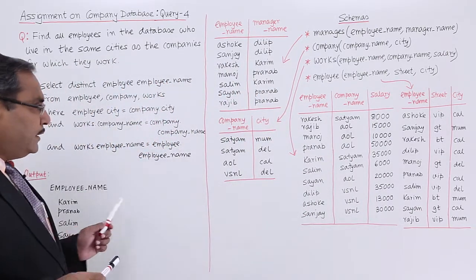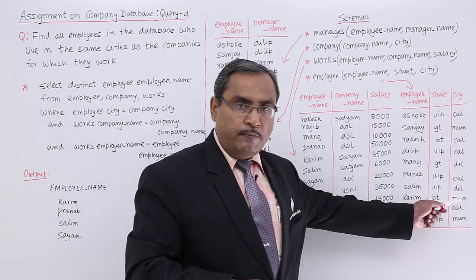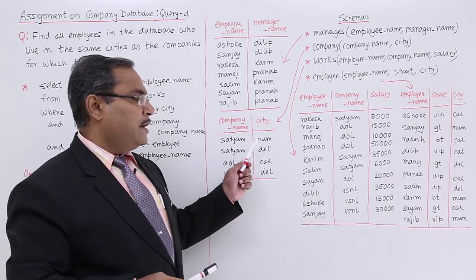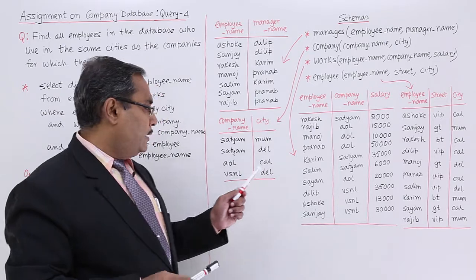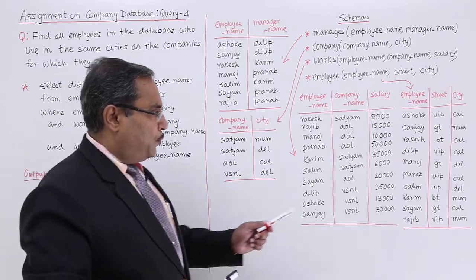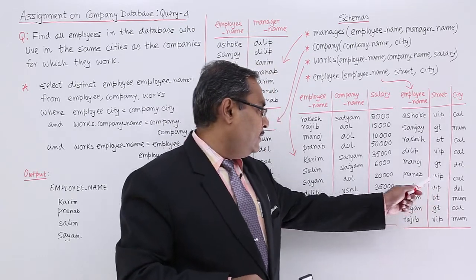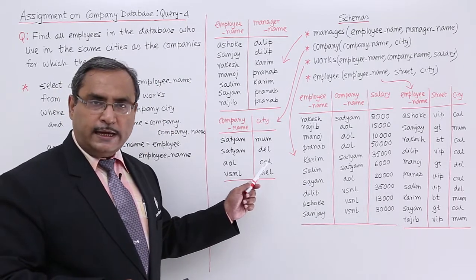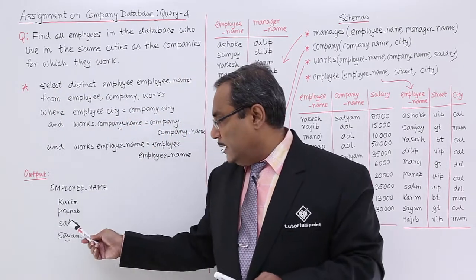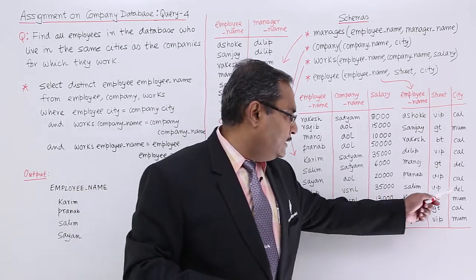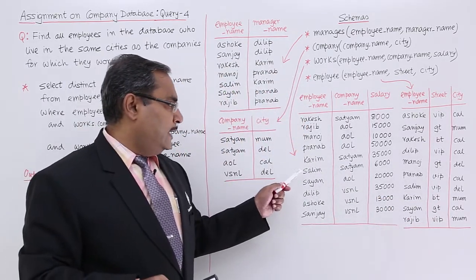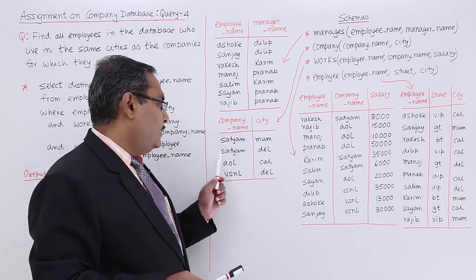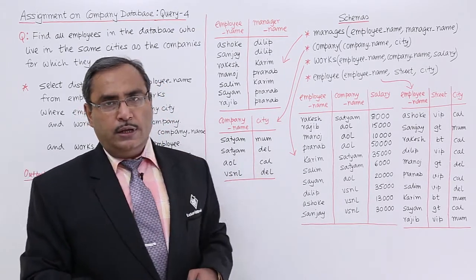Let me verify each result. For Karim, he is in Mumbai, and he is working at Shottam, which has a branch office at Mumbai. For Prunov, he is residing at Calcutta, and he is working at Aval, which has an office at Calcutta. For Selim, he is at Delhi, and for Shion, he is at Calcutta. Selim is working at Shottam, which has an office at Delhi, and Shion is working at Aval, which has an office at Calcutta. So in this way these four names appear in the output.